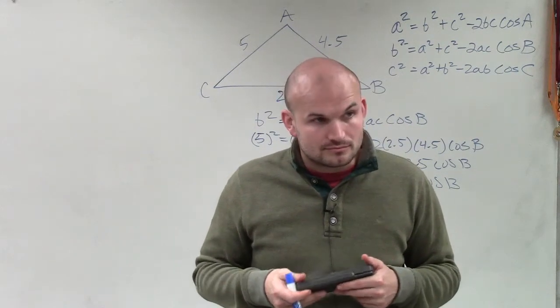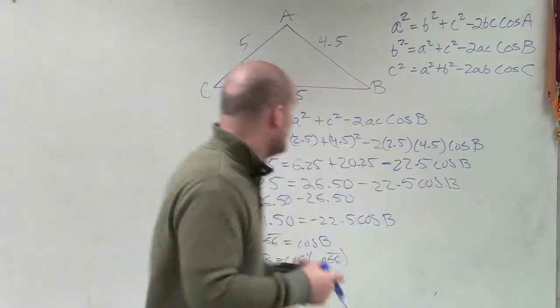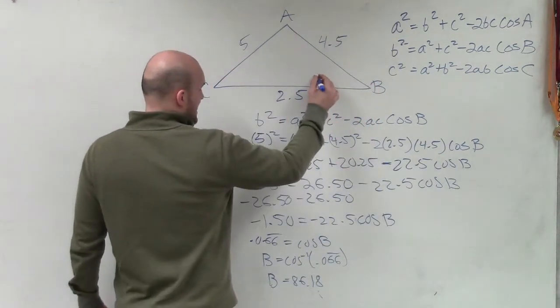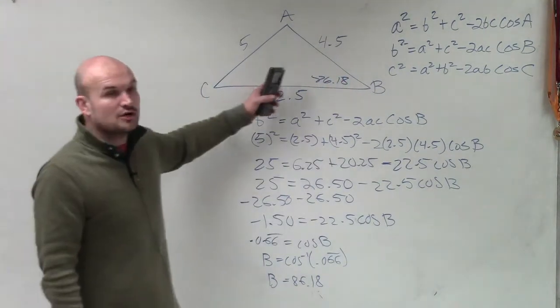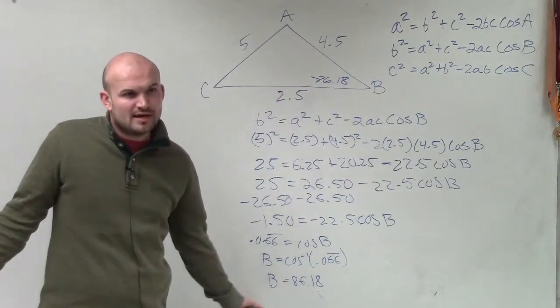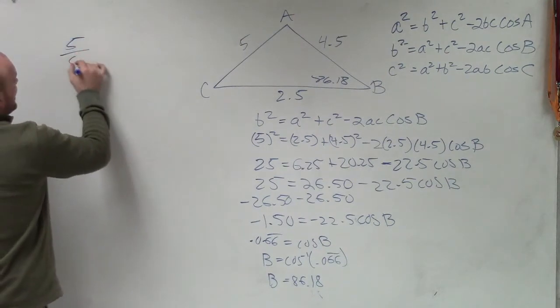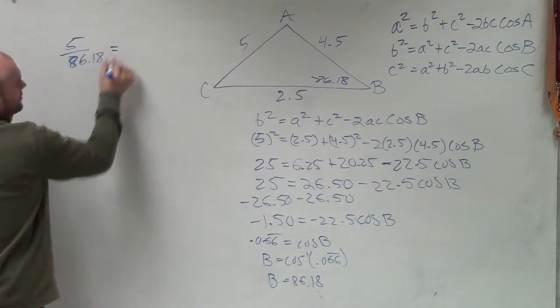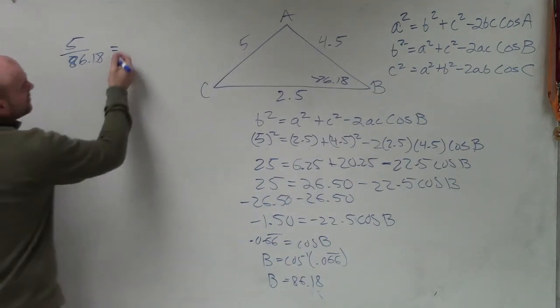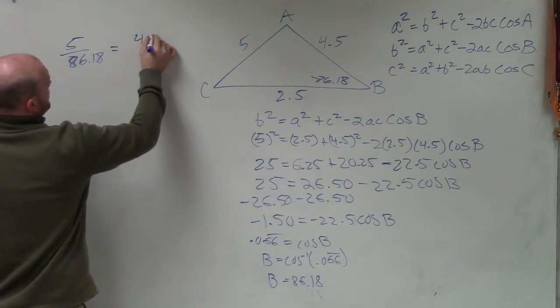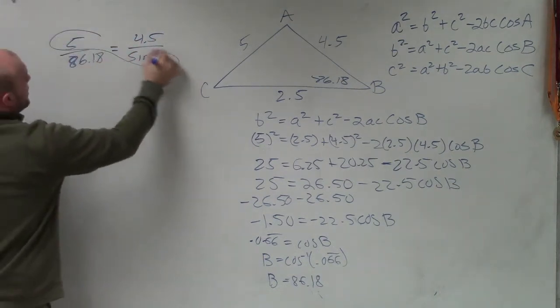If they give you the Law of Cosines, you find this angle, then you can use the Law of Sines? Yeah, so now we know this angle. So b is now 86.18. Now if you want to do the Law of Cosines for every one of these angles, that's fine. That's a little bit of work, right? So what I'd prefer to do is do the Law of Sines. 5 over sine 86.18 is equal to—what do you want to do, c or a? C. Let's do c. So c is 4.5 over the sine of c.